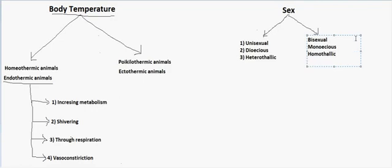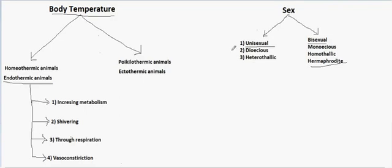For animals, the terms unisexual and bisexual are used, along with hermaphrodite. The terms dioecious, monoecious, and homothallic are used for plants. Unisexual means that the sexes are separate — there is a distinct male organism and a distinct female organism. Bisexual means the sexes are not separate; in one organism both male and female parts are present.